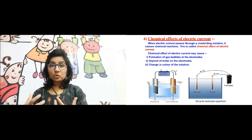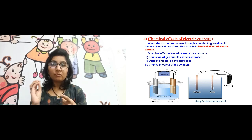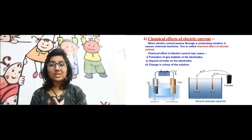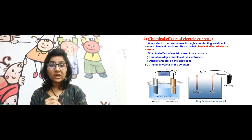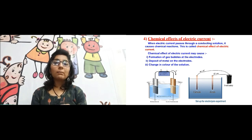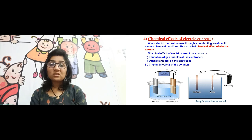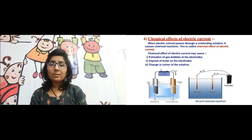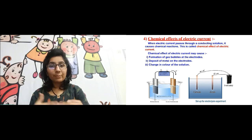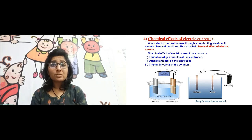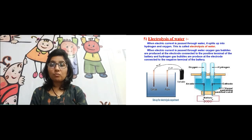So we can see gas bubbles near one or both electrodes. Another thing that can happen — it depends on which electrolyte you have taken — is a deposit of a different metal on one of the electrodes. Also, there can be a change in the color of the solution. These are the various chemical effects of electric current. We will see these effects one by one and take a few examples, starting with the electrolysis of water.